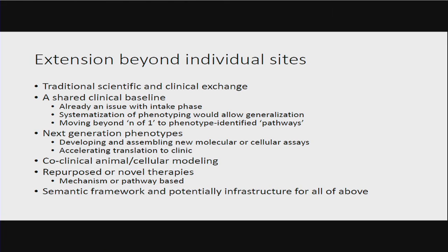On expanding beyond individual sites: traditional exchange, a shared clinical baseline — if we had a barcode for the phenotypes, we could use that as a screen to understand when it would be feasible or worthwhile to undertake an exam like this. Moving beyond NF1 to phenotype-identified pathways, thinking about the phenotypes we bring to the table, animal modeling, repurposing or identifying novel therapies, and finally a semantic framework and potentially infrastructure for all of the above.